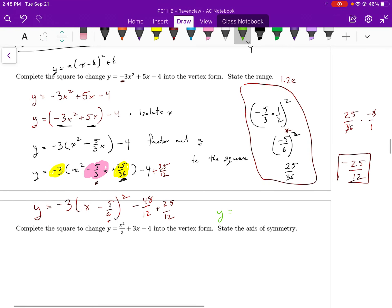I need a common denominator, so I get my final answer. y is equal to negative 3, open brackets, x minus 5 over 6 squared, minus 23 over 12 when I complete, when I collect the like terms.